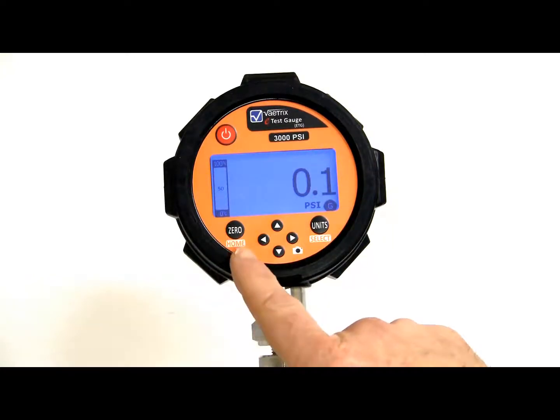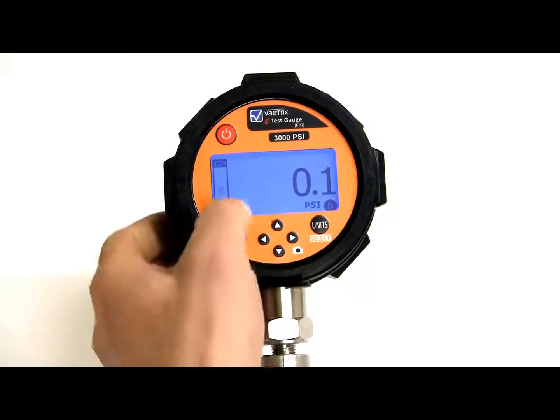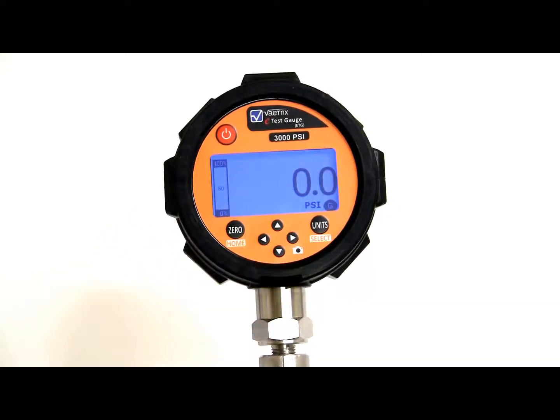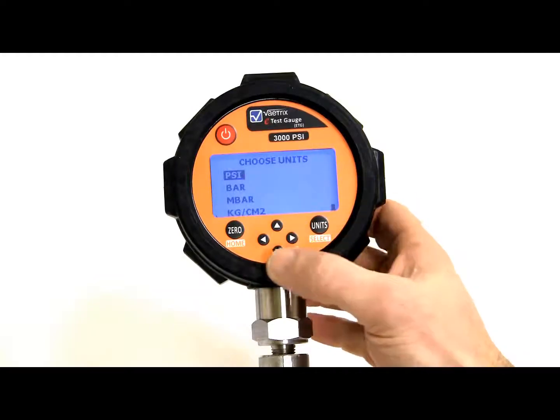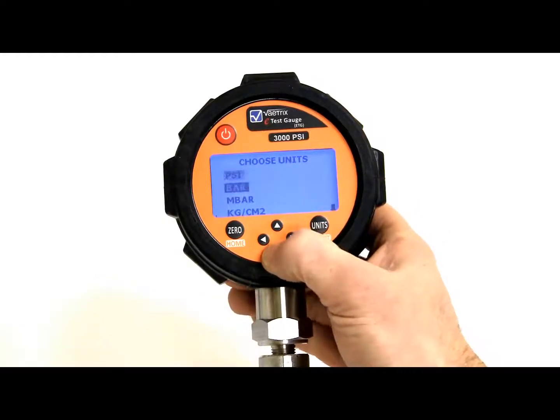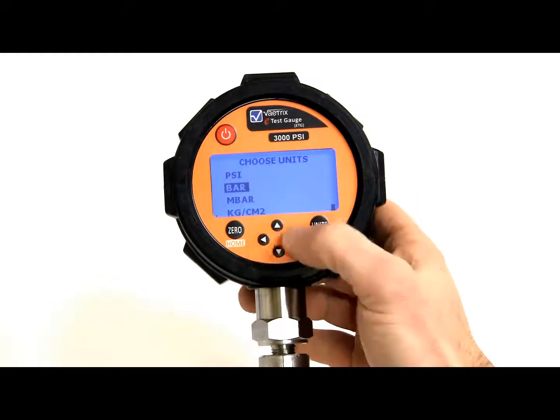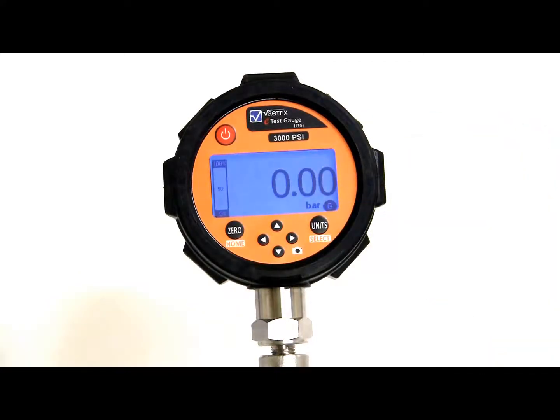So in measure mode, you have the ability to zero the unit by hitting the zero key. You can change the units by hitting the units key, using the arrows to navigate where you want. So we'll select bar, hit select, and you change the bar.